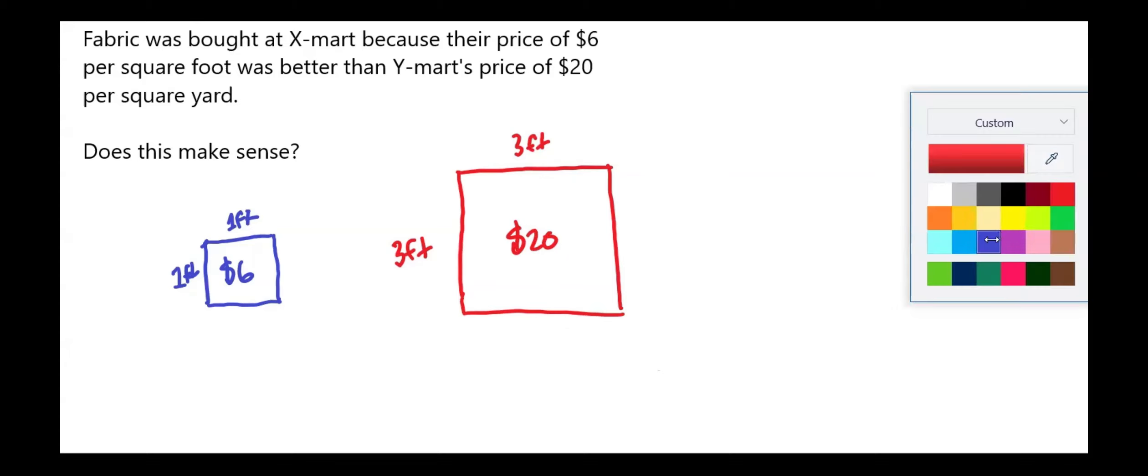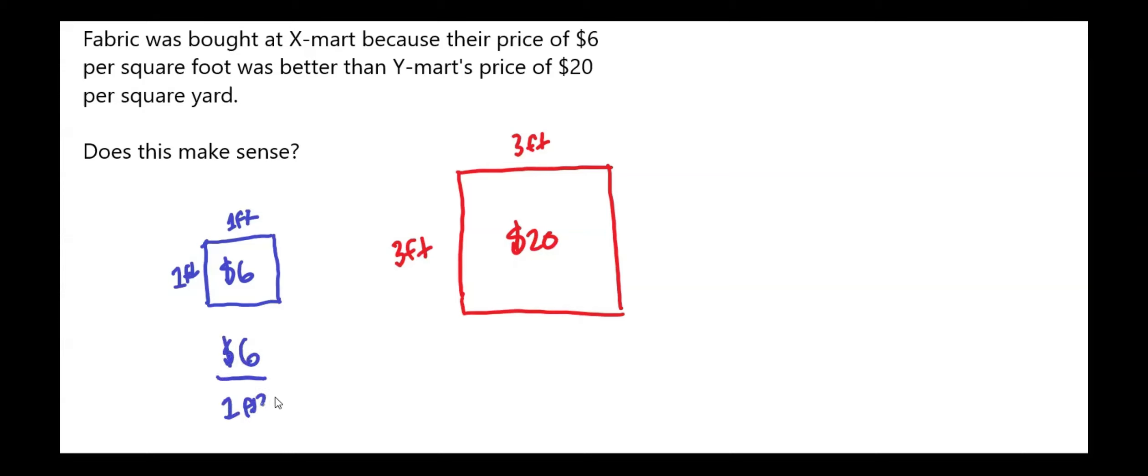Let's do some simplifying so we can get a clearer picture of the price here. Because right now what we have is we have $6 for one square foot versus $20. Now, three times three is nine. So that's nine square feet.